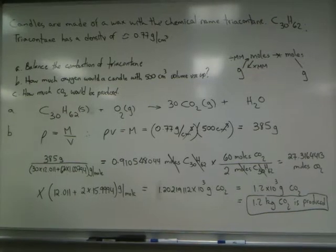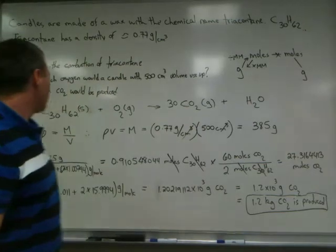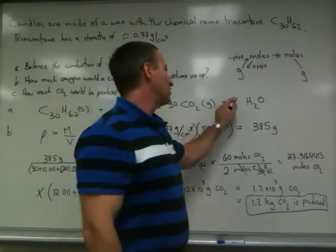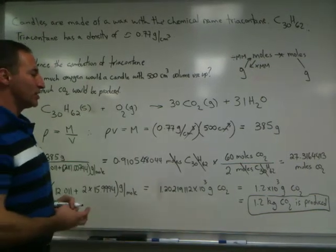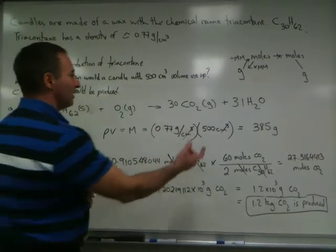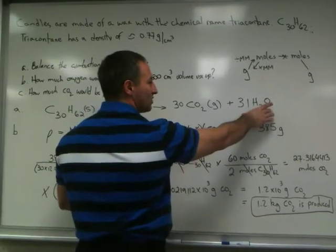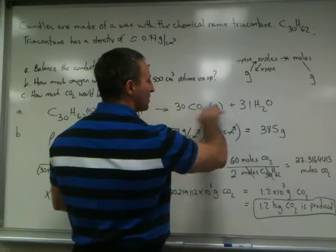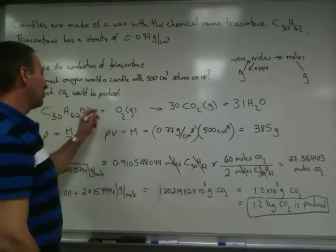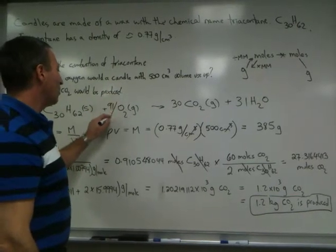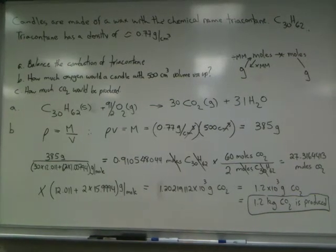Triacontane also has 62 hydrogens. The only source of hydrogen on the right side of the equation is water. So we're going to balance that by putting a 31 in front of H2O. Now we can concern ourselves with balancing the oxygens in the equation, but we start from the right-hand side. There are 30 times 2 oxygens here and 31 oxygens there. So for a total of 60 plus 31, 91 oxygens. But because oxygens come in pairs, it's a diatomic element, we're going to write the number 91 over 2.